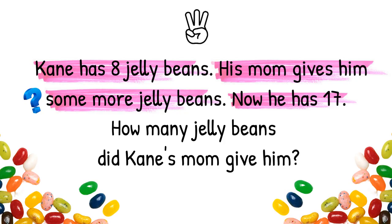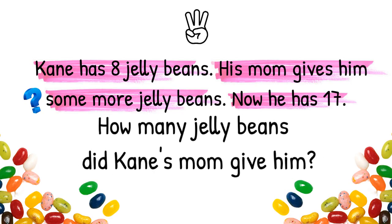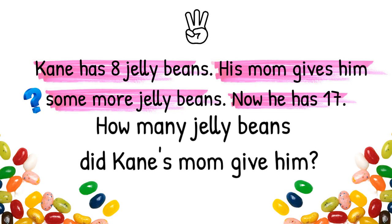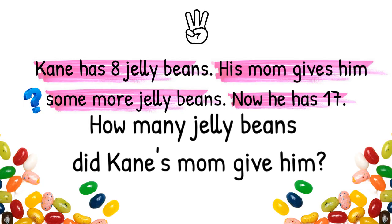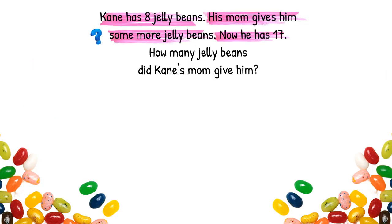Okay, now we have to ask ourselves: what is the question that we have to solve? Yes — how many jelly beans did Cain's mom give him? So now that we have all the important information highlighted and a question mark next to the word some, we know what the question is that we have to solve. Now we have to ask ourselves: how are we going to solve it?